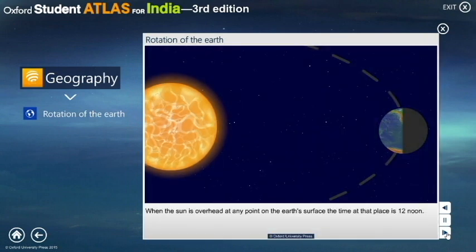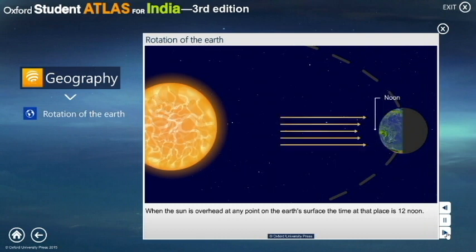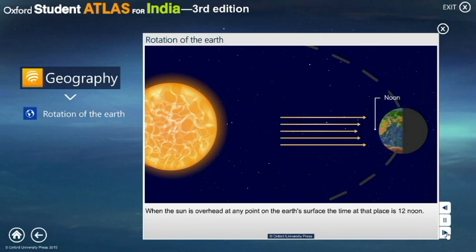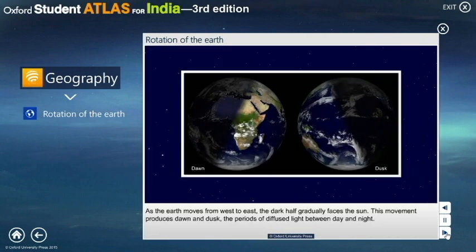When the sun is overhead at any point on the Earth's surface, the time at that place is 12 noon. As the Earth moves from west to east, the dark half gradually faces the sun. This movement produces dawn and dusk, the periods of diffused light between day and night.